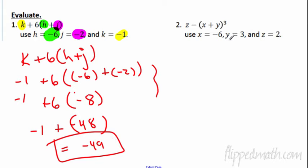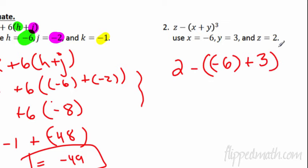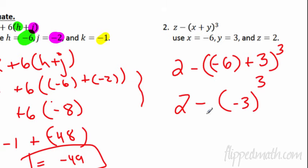Number 2: we're going to sub in. We get 2 minus, and we have an X so we sub in negative 6 in parentheses, plus we get a 3. I don't need parentheses for positive, but you can add them. We get 2 minus — I have to do grouping symbols first using GEMDAS. Inside the parentheses: negative 6 plus 3 is negative 3. We have an exponent, so negative 3 cubed: negative 3 times negative 3 times negative 3 gives negative 27.